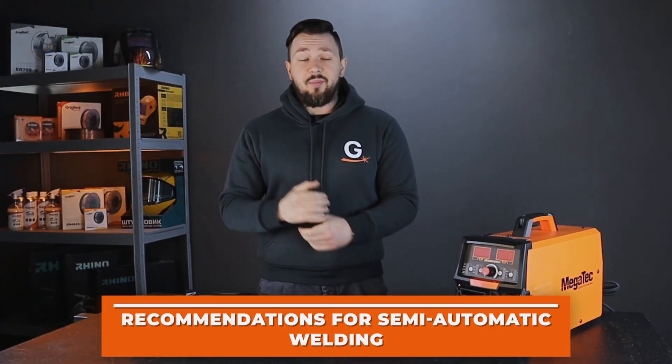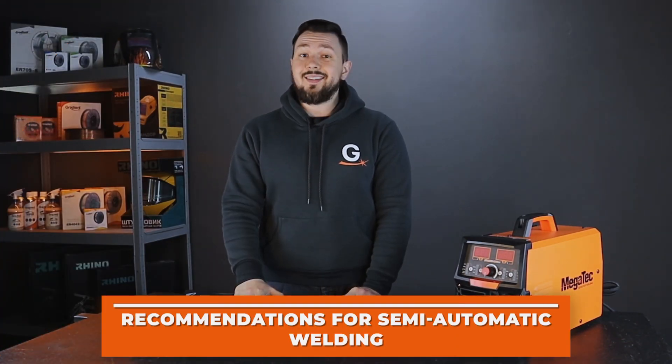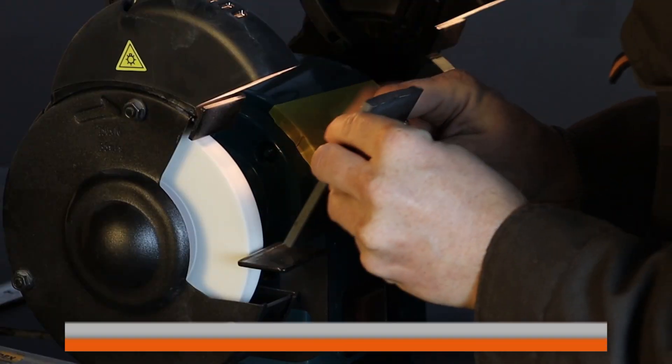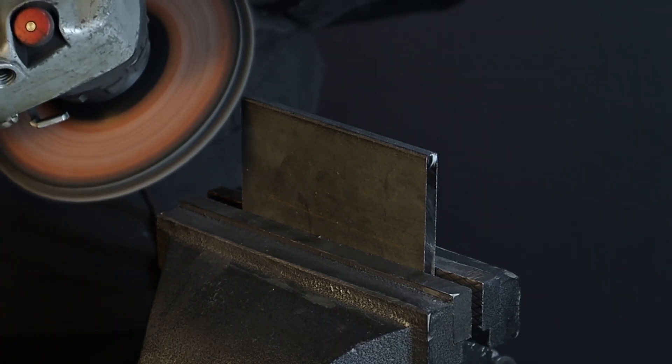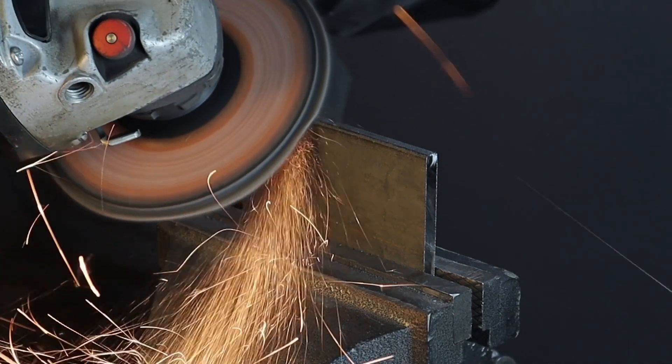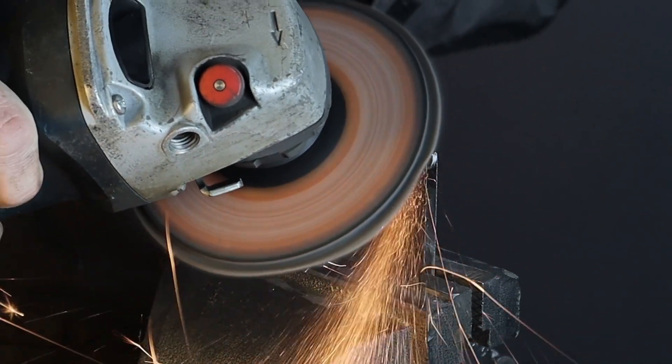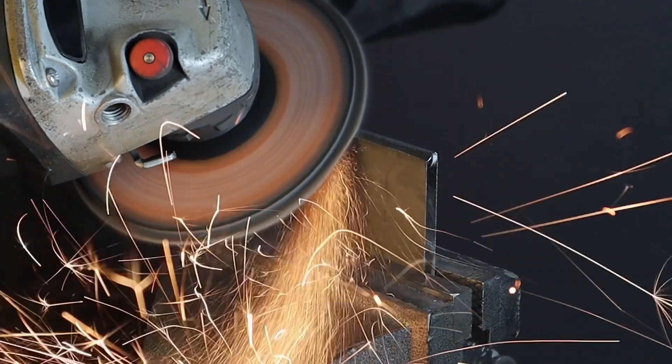For a high-quality vertical seam with a semi-automatic machine, you must adhere to the following rules. For metal with a thickness of 4 mm or more, we recommend chamfering. This will increase the penetration of the metal and the quality of the weld. The contours of the weld will also be better visible.